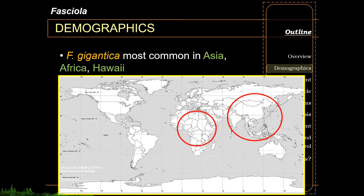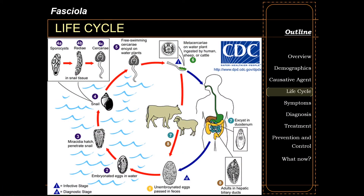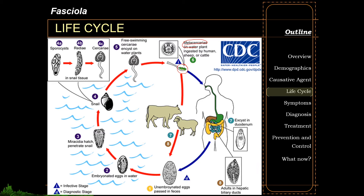Here is the life cycle of Fasciola. Fasciola infection starts when humans ingest the infective stage called the metacercaria through ingestion of the second intermediate host — your water plants containing the metacercaria. Excystation happens in the duodenum, and once inside the gastrointestinal tract, the metacercaria releases the larva, which then seeks to find its way toward the liver.